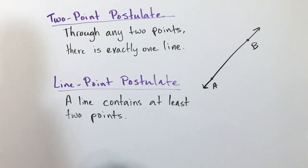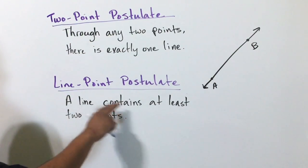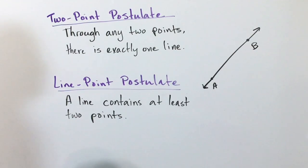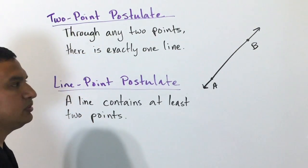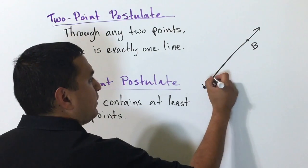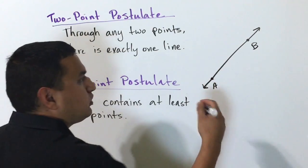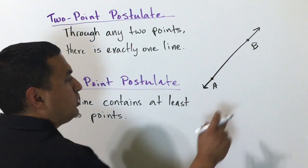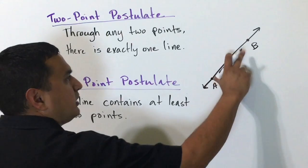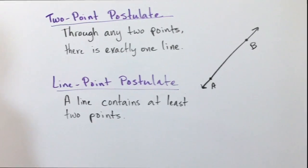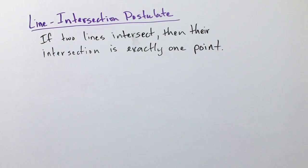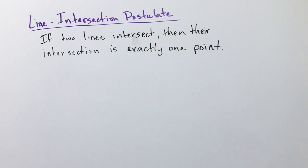The line-point postulate says that a line contains at least two points. It's kind of the converse, just saying that I have to have two points to name a line — or if I have a line, I have to have at least two points. The line-intersection postulate says if two lines intersect, then their intersection is exactly one point.